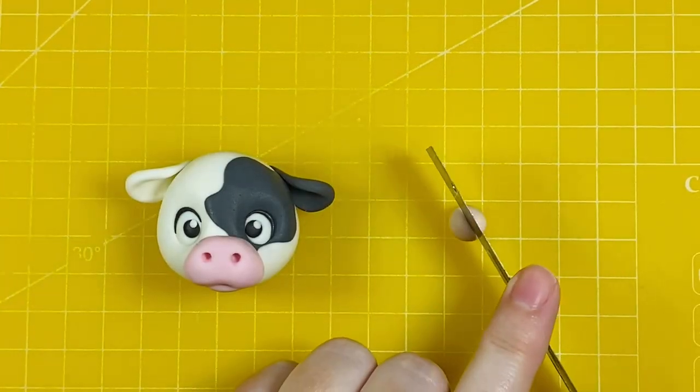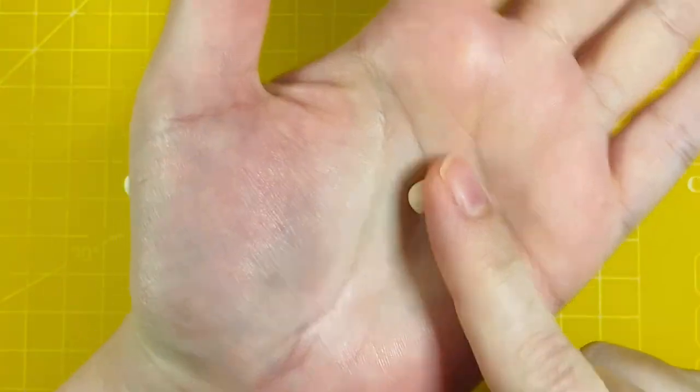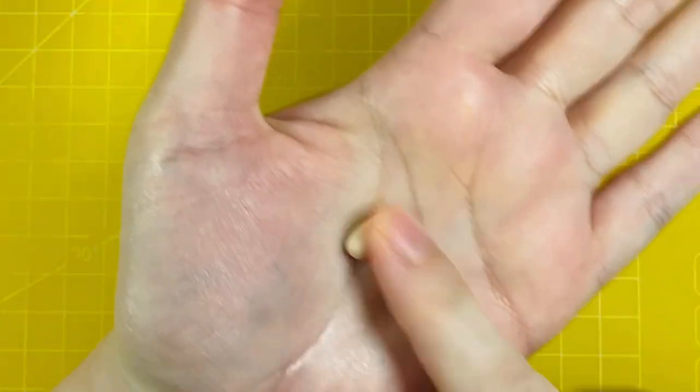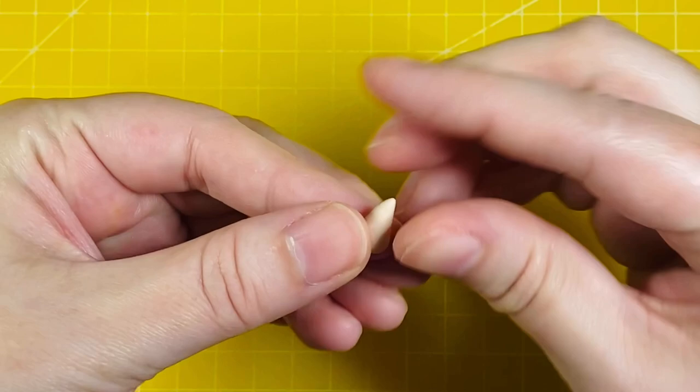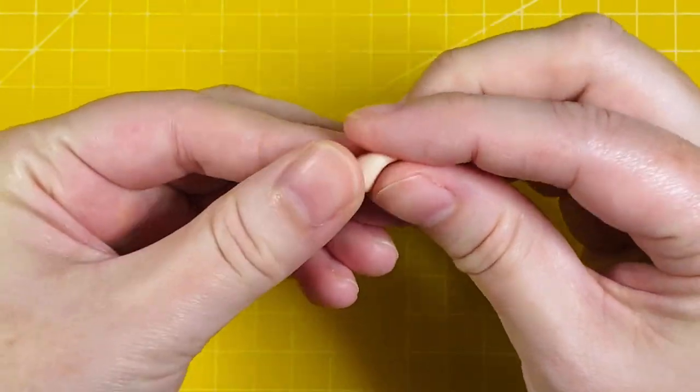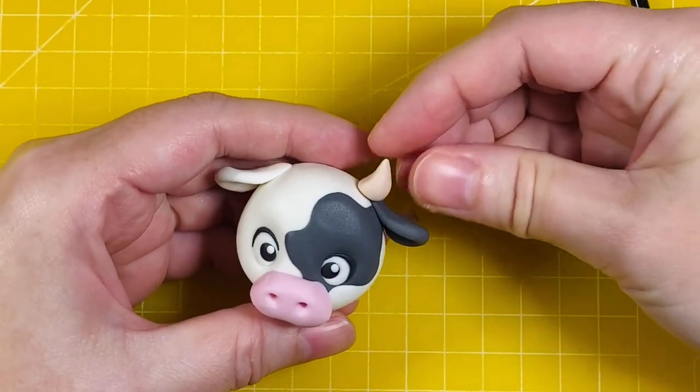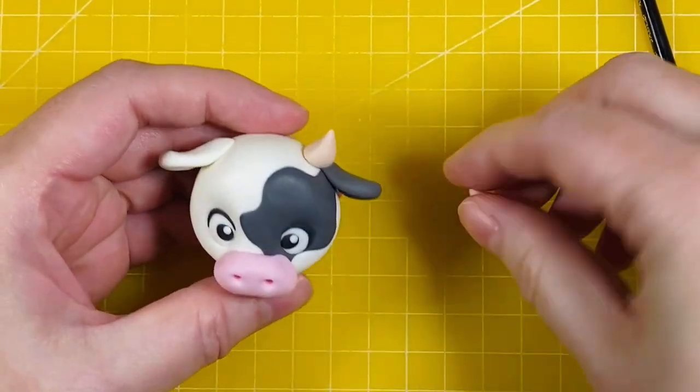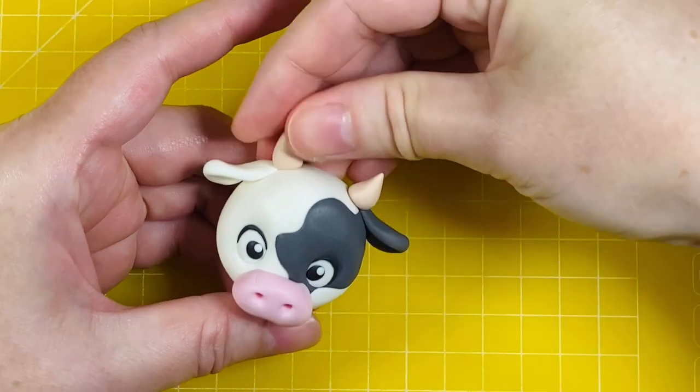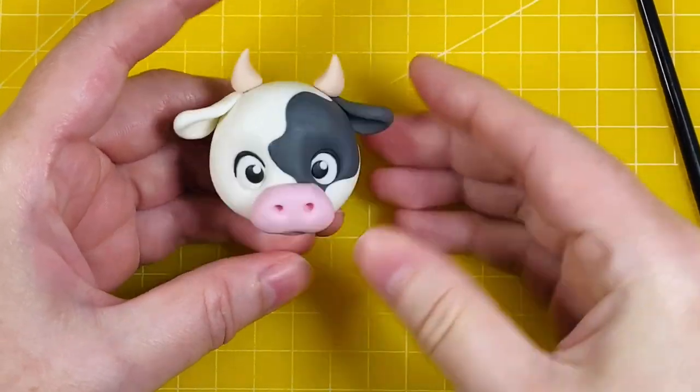Now we're on to the horns. I've got 0.5 grams divided by two, and I've used a beige color modeling paste—I think it might be Chestnut by Sugar Flair. I rolled it into a cone shape, trimmed off the wide end so it's got a nice flat base, and then attached that to the top of the cow's head.